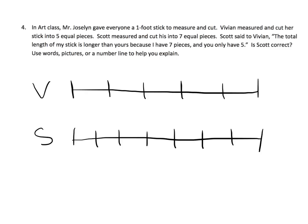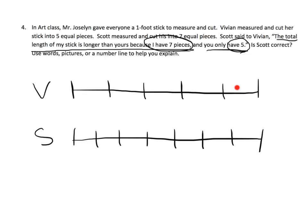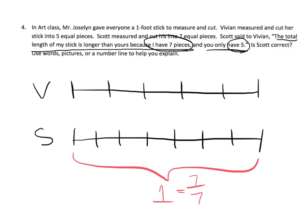Scott says the total length of his stick is longer than Vivian's because he has seven pieces and she only has five. Is Scott correct? No, Scott's not correct, because both kids were given the exact same one-foot stick. Vivian cut hers into five pieces and Scott cut his into seven pieces. Yes, he has more pieces, but his pieces are smaller because he cut his one-foot stick into sevenths, while Vivian cut hers into fifths. Both sticks are exactly one foot long.